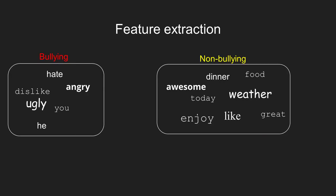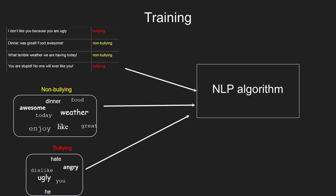Next, we perform feature extraction. We extract common attributes in the bullying content category, such as use of negative words like hate, angry, and ugly, and pronouns such as you and he. We also extract common attributes in the non-bullying content category, such as use of positive words like happy and love, and neutral words such as dinner and weather.